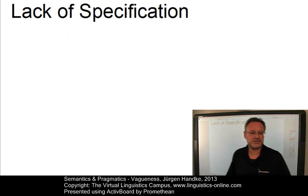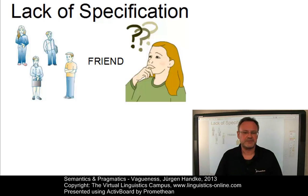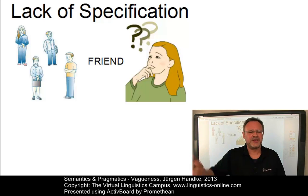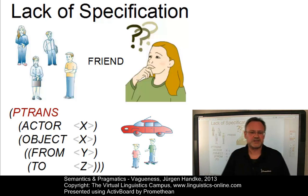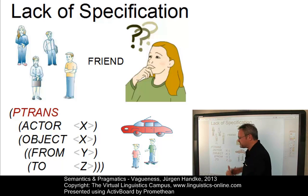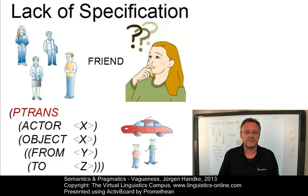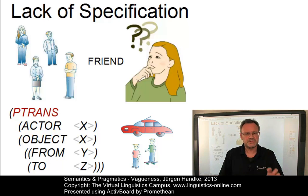The next case, lack of specification, refers to cases where the meaning, although clear in principle, is only generally specified. For example, the lexeme 'friend' is unspecified for gender, race, age, and so on. Or take verbs: the meaning of 'go' can be clearly specified in terms of conceptual dependency theory as an action of physical transfer. However, beyond this specification it can denote a variety of actions. The sentence 'John went home' leaves open how John got there — did he walk, use his skateboard, his new car, or run? Items such as 'go' are not specified well enough as far as their interpretation is concerned.